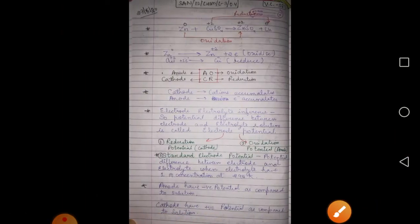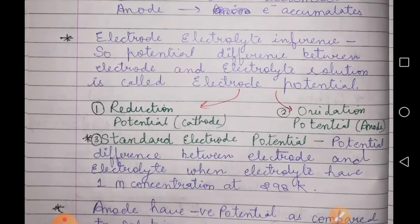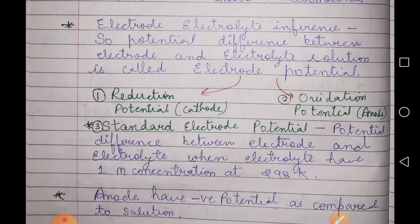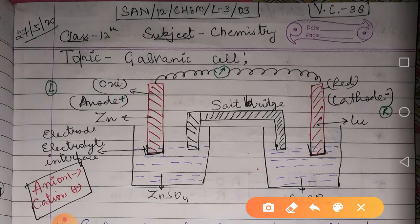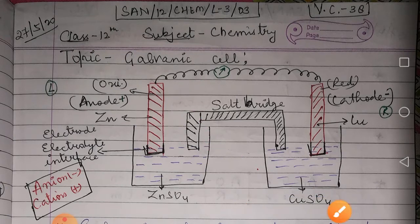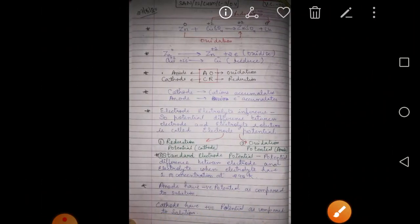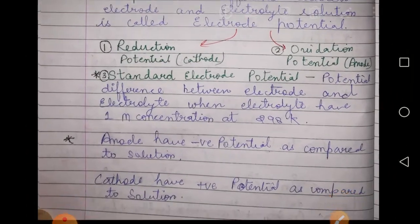The electrode-electrolyte interface is the potential difference between the electrode and the electrolyte solution. The electrode has one potential and the solution has another potential, and the difference between these two potentials is called the electrode-electrolyte interface. It is of two types: reduction potential and oxidation potential.